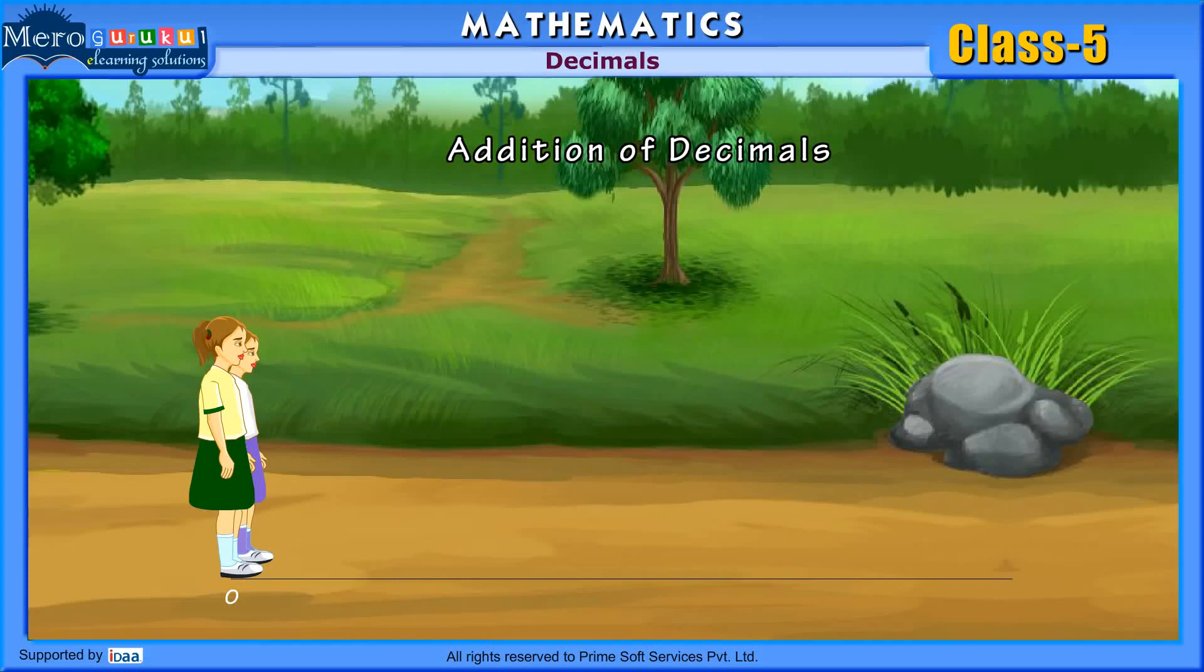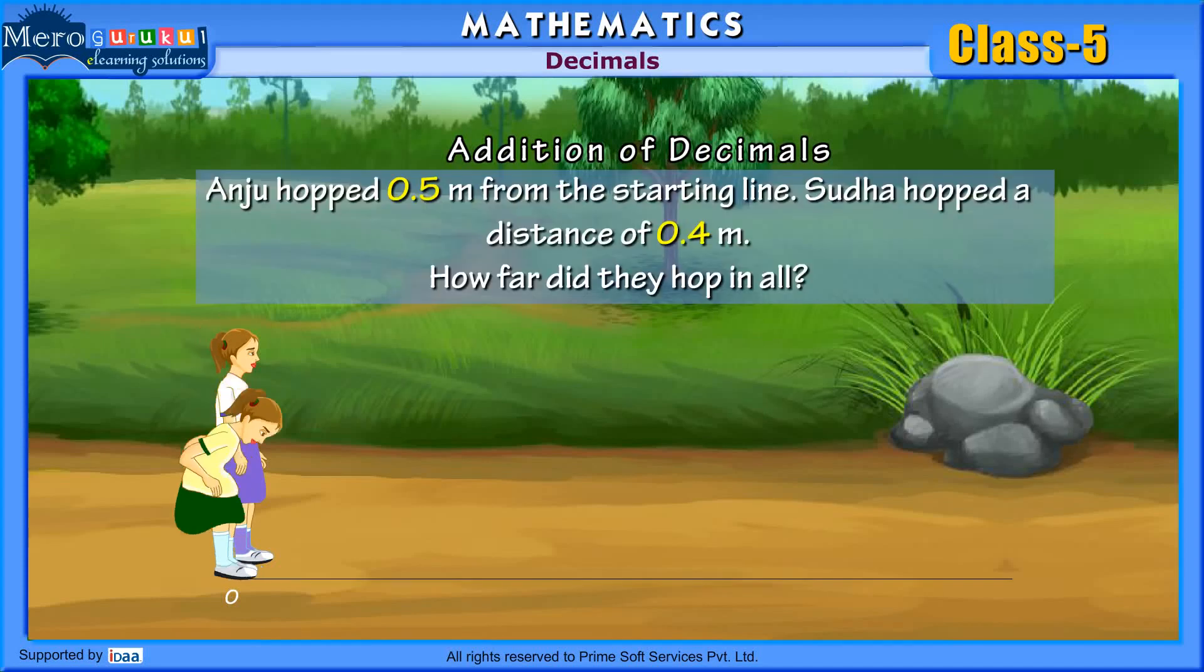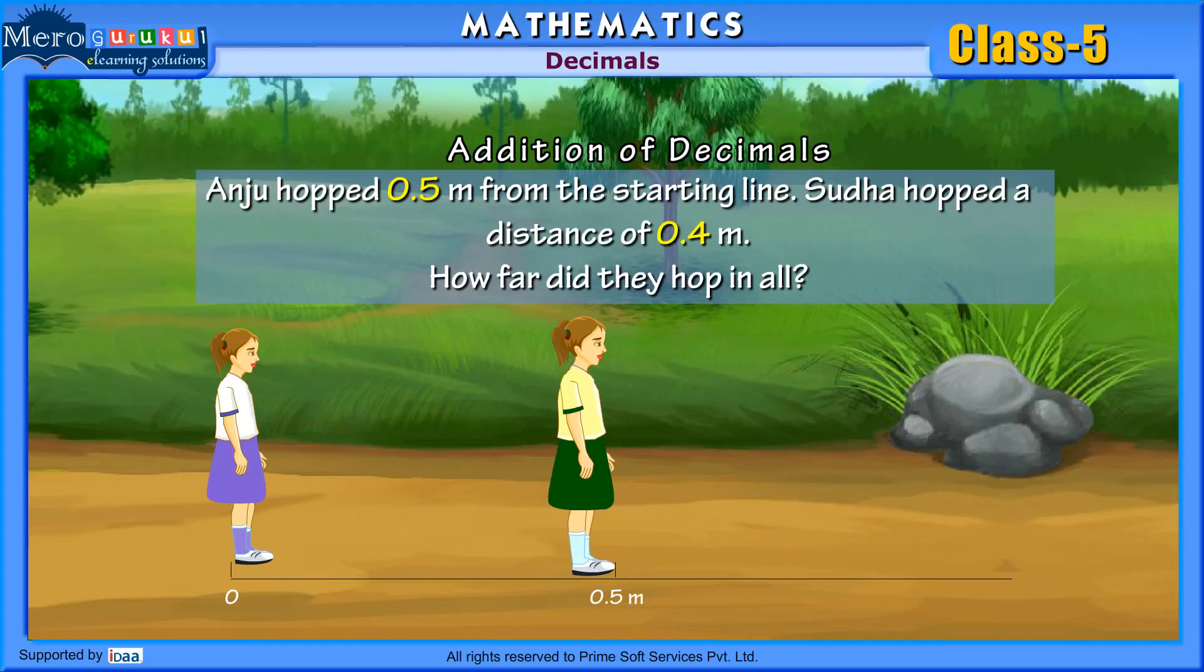Addition of Decimals. Anjo hopped 0.5 meters from the starting line. Sudha hopped a distance of 0.4 meters. How far did they hop in all?